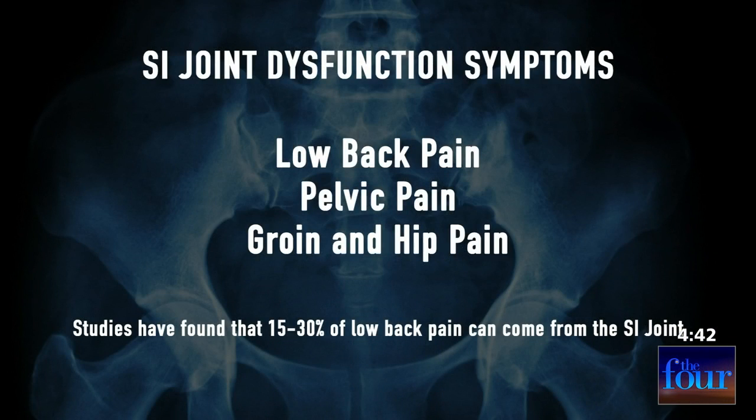It can be a big problem for people with back pain. SI joint dysfunction is fairly common in patients who have back pain, and unfortunately the symptoms are sometimes indistinguishable from other back pain symptoms. Common symptoms are pain in the back, in the pelvic area, the groin, and the hip. Studies have shown up to 30% of patients with low back pain can have some form of SI joint disease, so it can have a very strong relationship to low back pain.